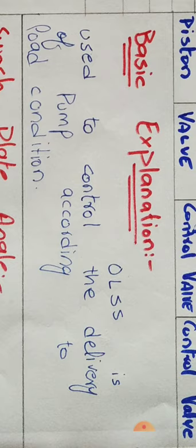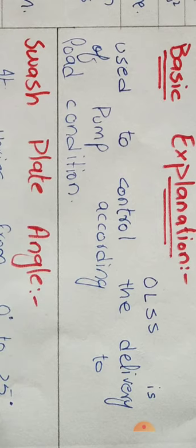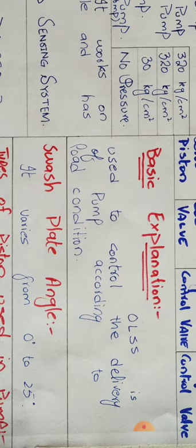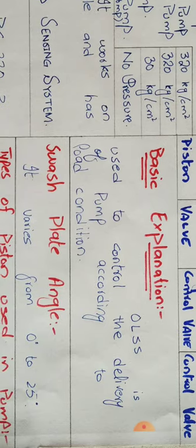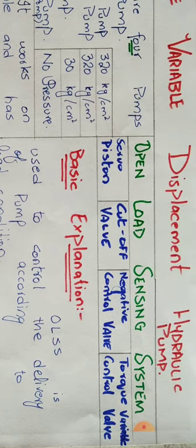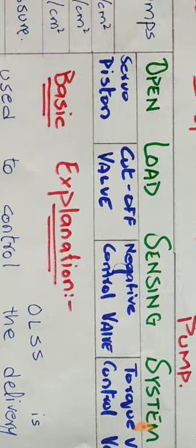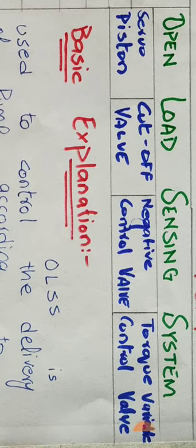OLSS is used to control the delivery of the pump according to load condition. In the case of excavators, sometimes we have more delivery, sometimes less, according to load. This system is fitted with the pump for controlling the delivery of front and rear main pumps according to requirement. If there is more load, the pump will supply more oil. If there is less load, the pump will supply less oil. I will explain how this system works in another video dedicated to the Open Load Sensing System.